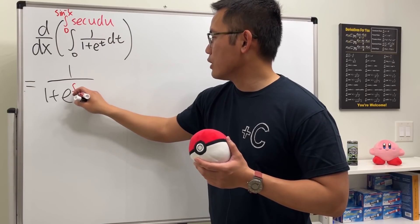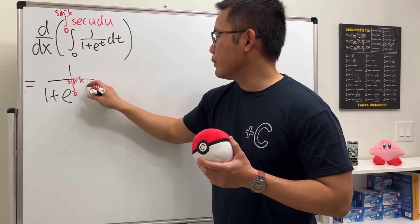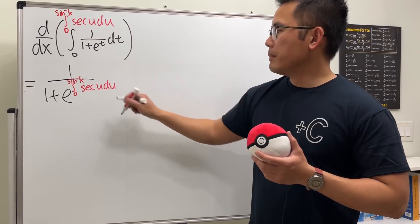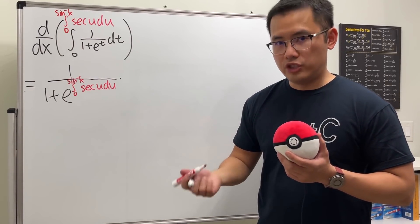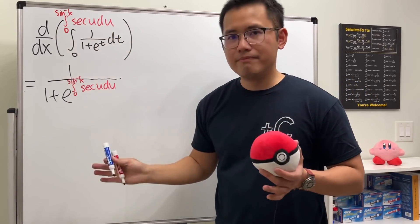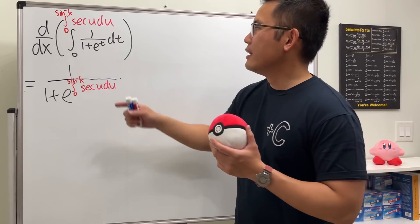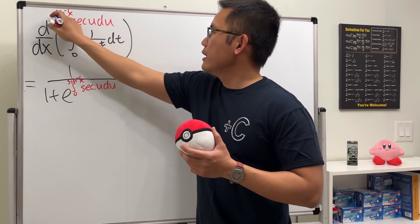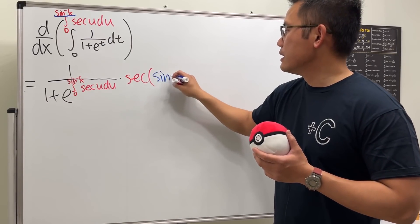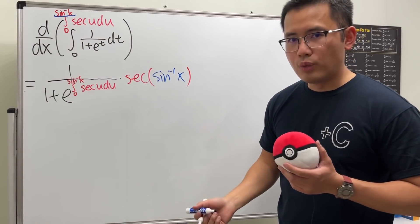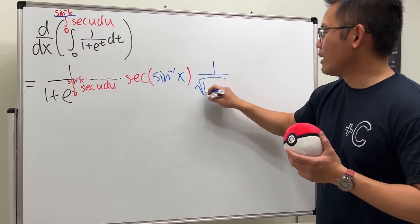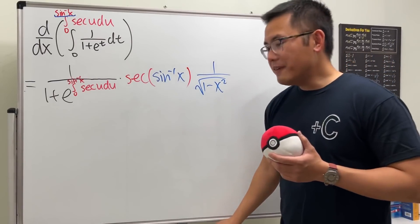...t becomes the integral going from zero to inverse sine x, and then we have secant u du. But this is not it yet, because of course we have to use the chain rule. So we put this inside here and we will get secant of inverse sine x, and lastly chain rule one more time — the derivative of that — so we get 1 over square root of 1 minus x squared.